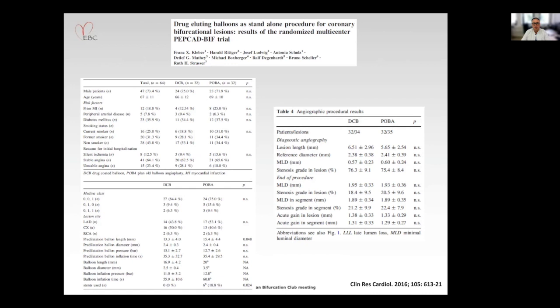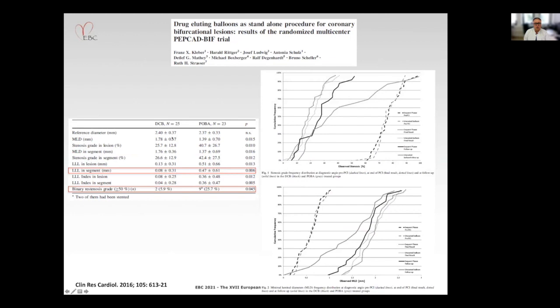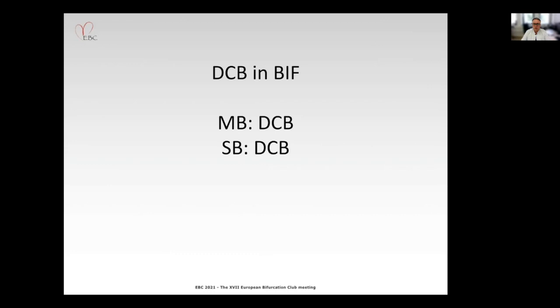Similar outcomes have been reported from the randomized PEPCAD-BIF trial — drug-coated balloon versus POBA, 32 patients each. Here we also see a signal of reduction of late lumen loss: 0.08 with the DCB versus 0.47 in the POBA group, and binary restenosis rate 6% versus 26%.